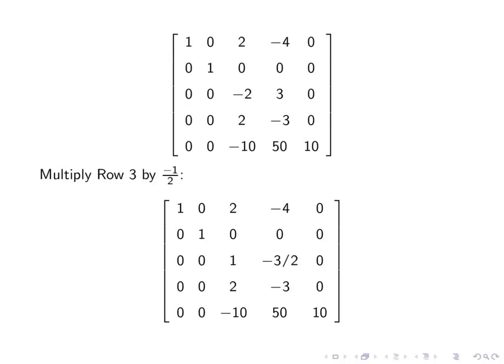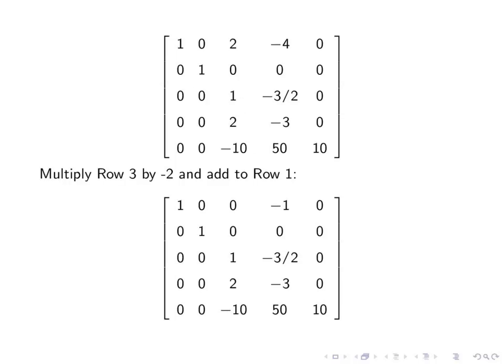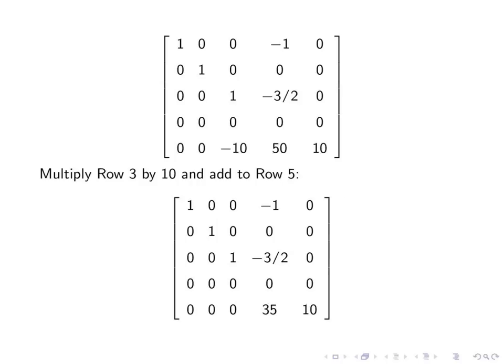Now we look at row three. We multiply by negative one-half. That puts a one on the main diagonal. Now we need zeros above and below. So we get a zero in the third column, first row. Multiply the third row by negative two, add to row one. And that gets rid of that two in the third column of the first row. And then we do rows below that. And you can see that just using straightforward Gauss elimination, we're arriving at a solution.